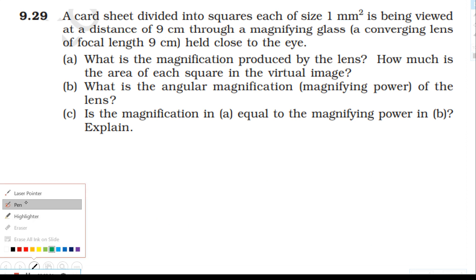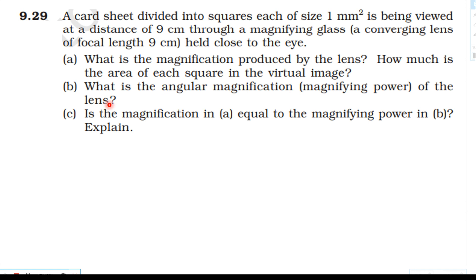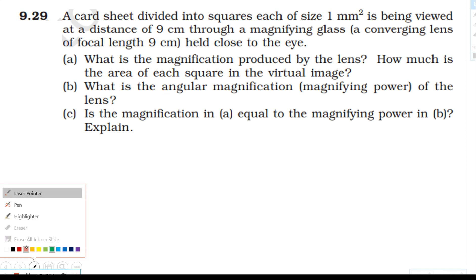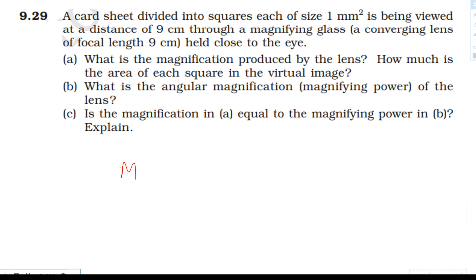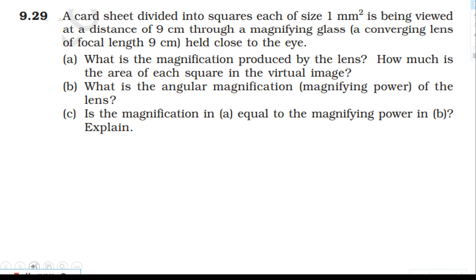The angular magnification of the lens — that is, the magnifying power — is also calculated. The magnification value is 2.8 in some conditions. Is the magnification equal to the magnifying power? These are compared and explained.